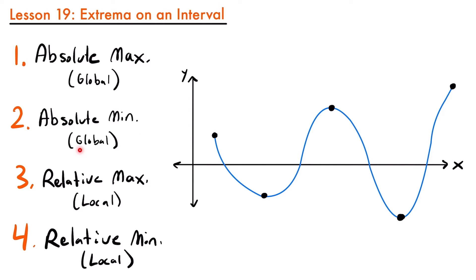The second type of extrema is the absolute minimum, also sometimes called the global minimum. This is just the lowest point on a graph, or the point with the smallest y-value, whether on a function or on an interval. Then we have the relative maximum, sometimes called a local maximum — the highest point in a certain area of a function. And then the relative minimum, the lowest value in a certain area, sometimes called a local minimum. Let's look at this graph to find each of these four types.